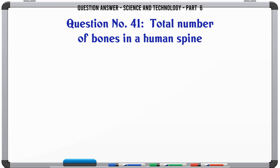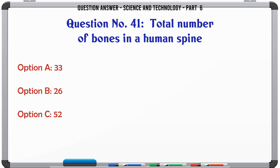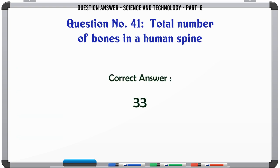Total number of bones in a human spine. A. 33. B. 26. C. 52. D. 21. The correct answer is 33.